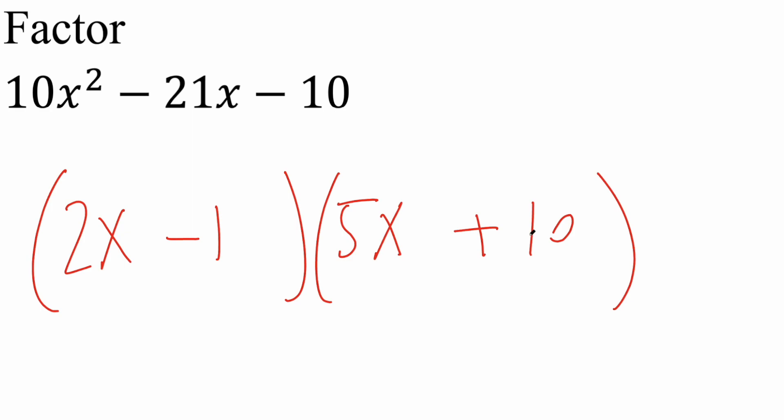So 2x times 10 is 20x. 5x times negative 1 is negative 5x. And 20x minus 5x is 15x, not negative 21x. So this is a bad combination.